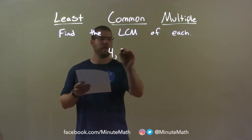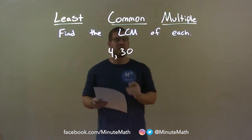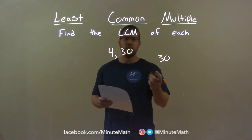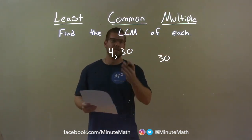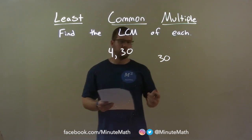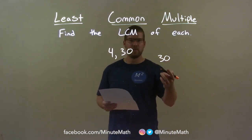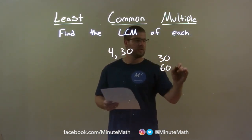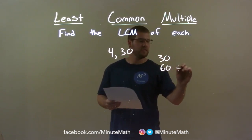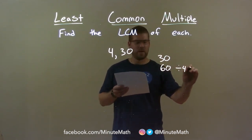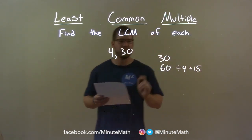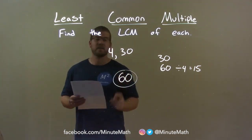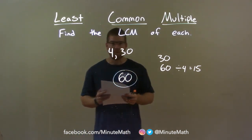4 and 30. I take the larger of the two numbers, 30, and see if the other number goes into it. 4 does not go into 30 evenly, so I go to the next multiple of 30, which is 60. Now 4 goes into 60 evenly — 60 divided by 4 is 15. So 60 is my least common multiple.